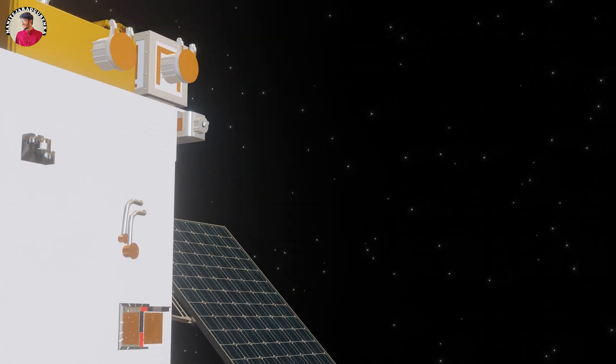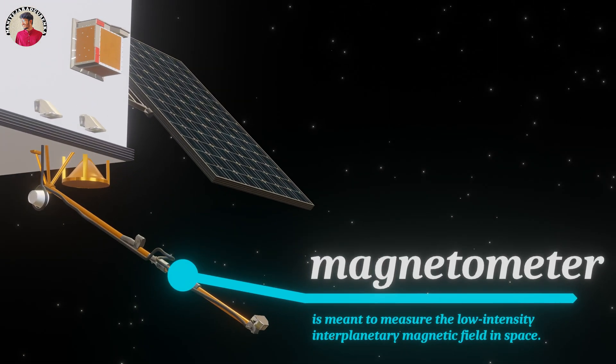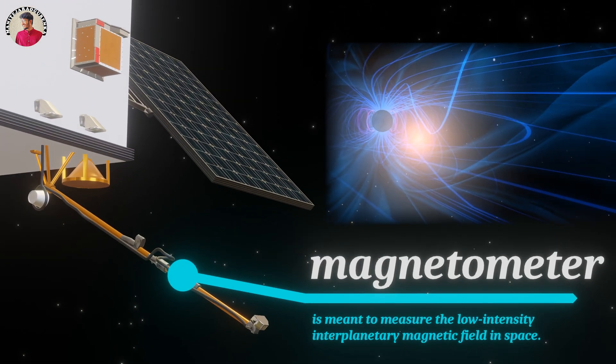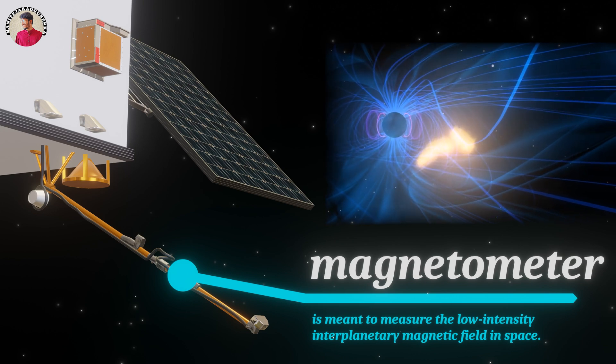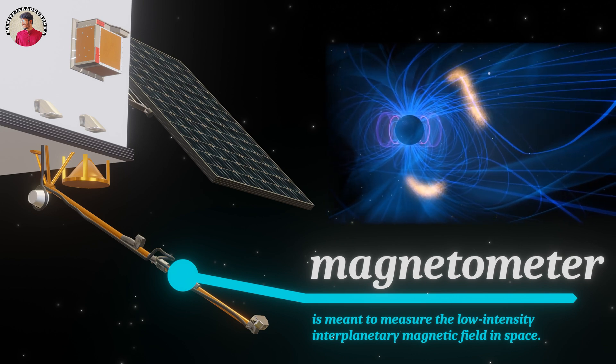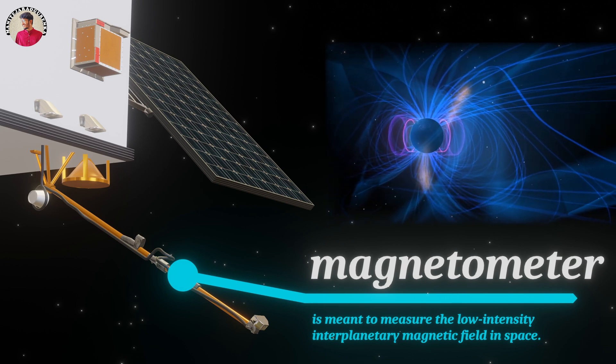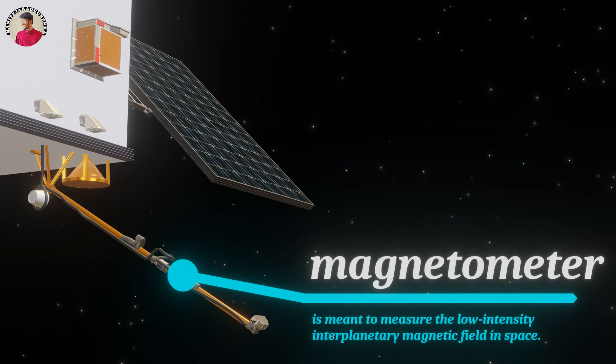The seventh will be the magnetometer onboard. Aditya L1 is meant to measure the low-intensity interplanetary magnetic field in space. It has two sets of magnetic sensors, one at the tip of a six-meter deployable boom, and the other in the middle of the boom, three meters away from the spacecraft.